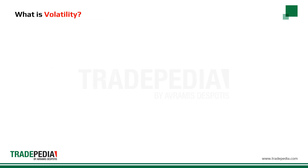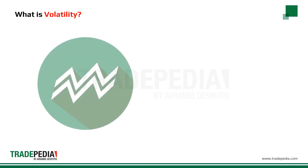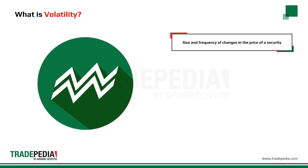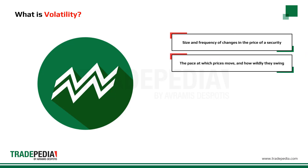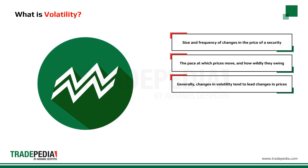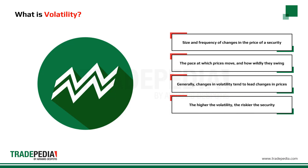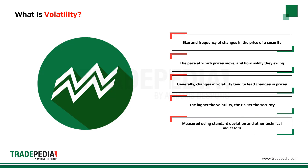What is volatility? Volatility measures the size and frequency of changes in the price of a security. It is the pace at which prices move and how wildly they swing. Generally, changes in volatility tend to lead changes in price. The higher the volatility, the riskier the security. Volatility is either measured by standard deviation or other technical indicators.